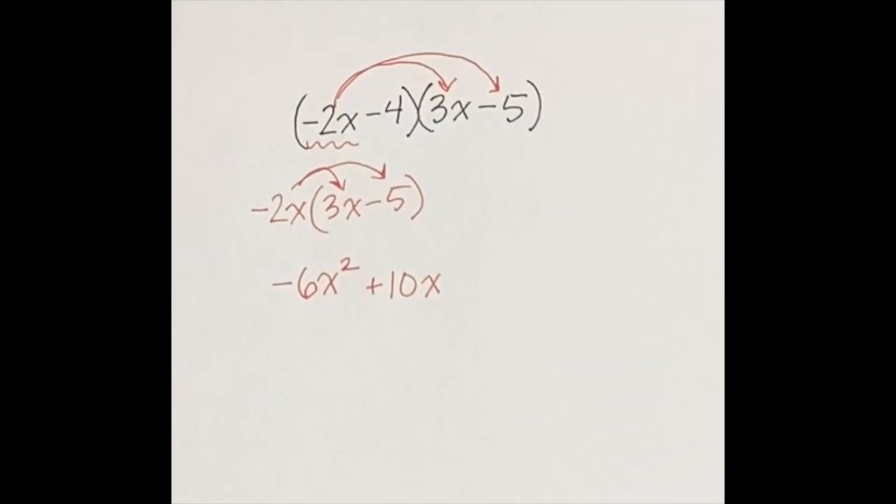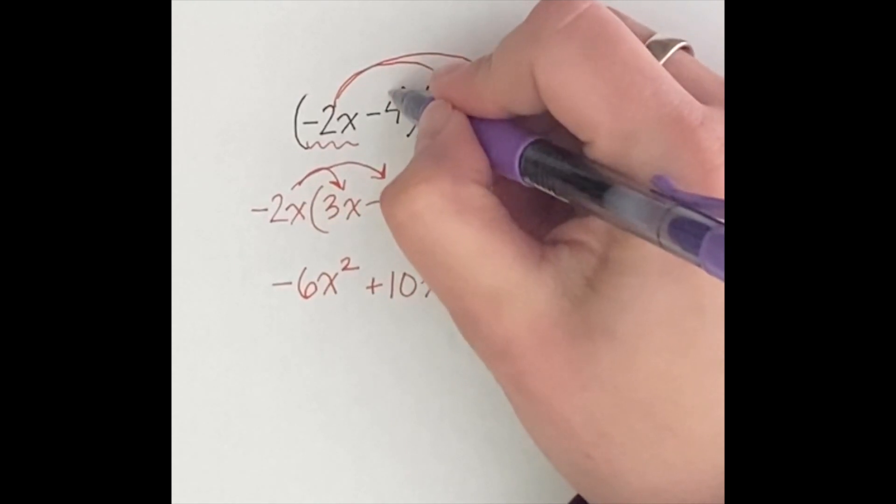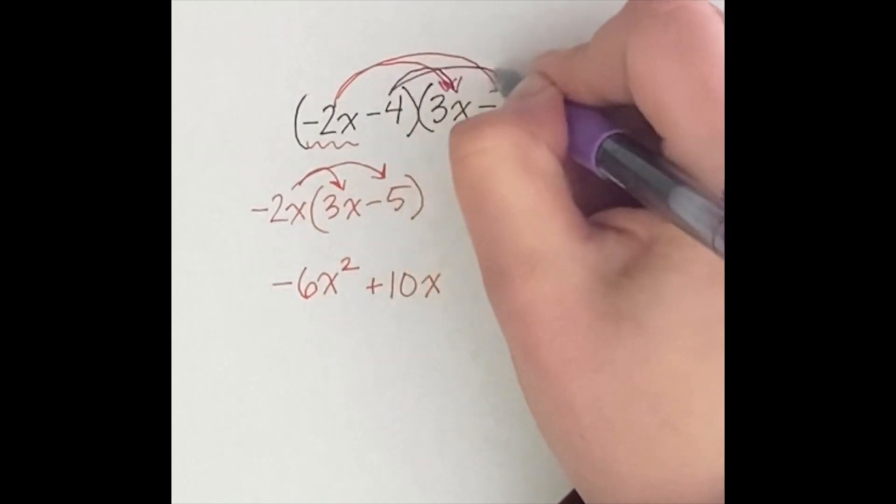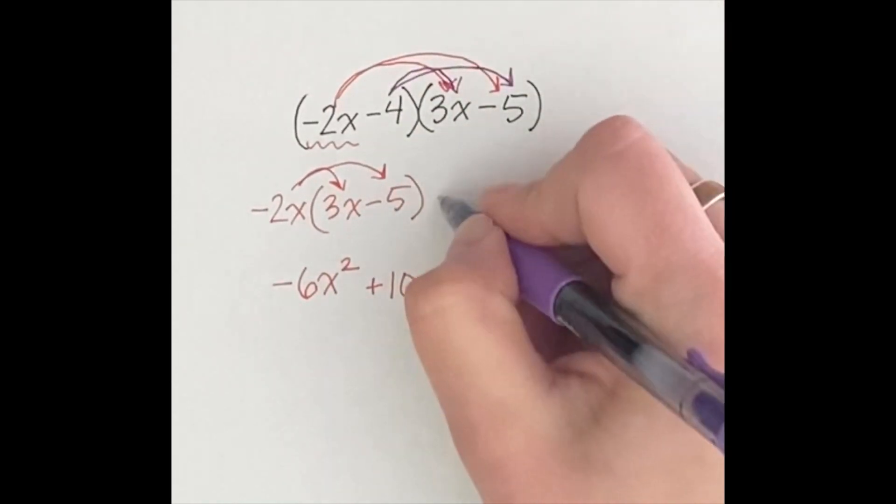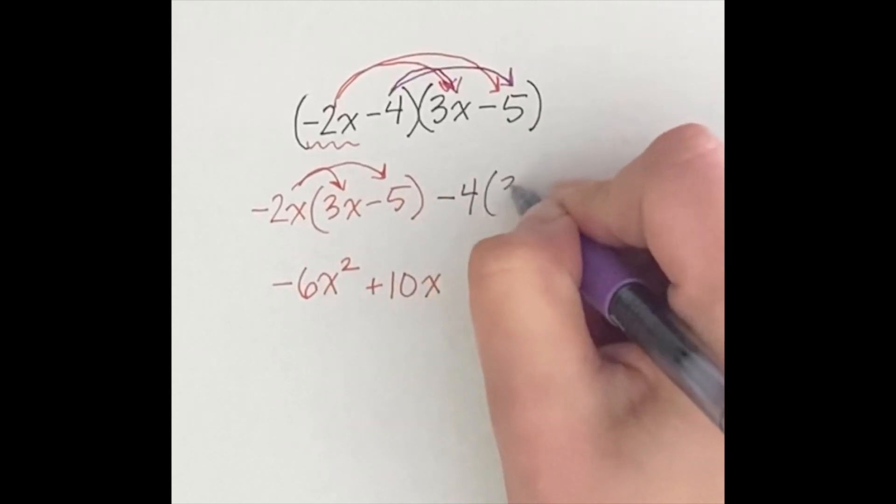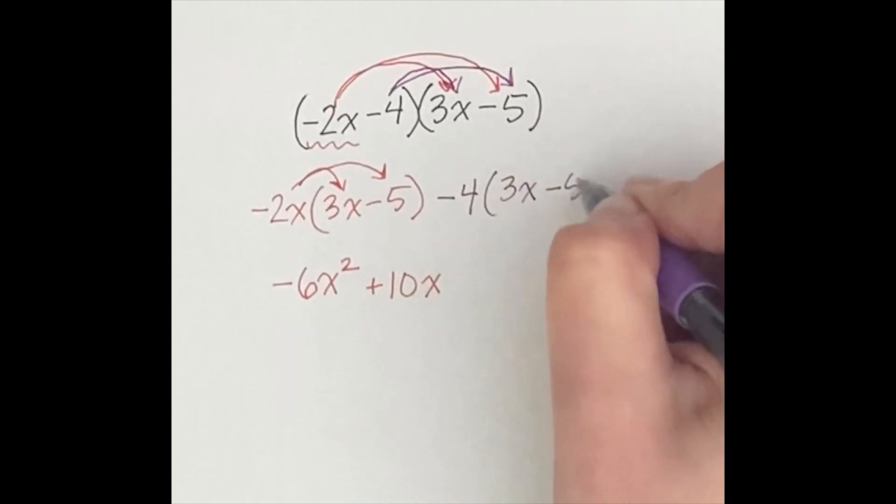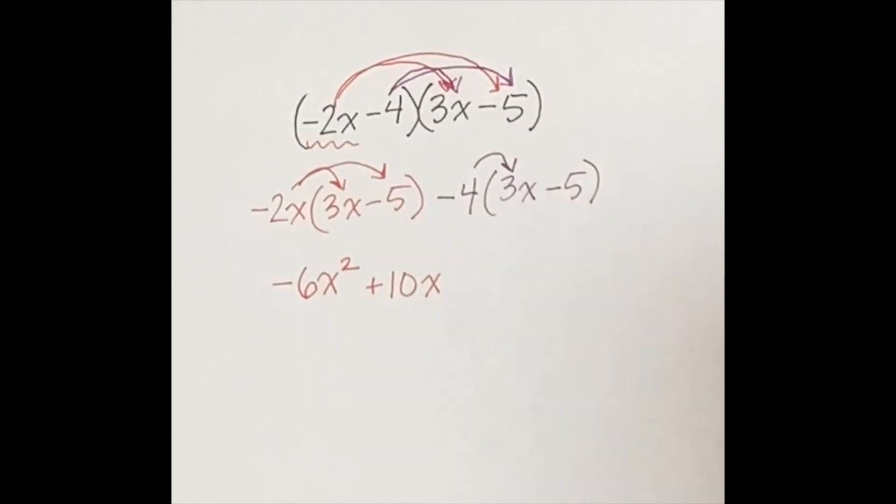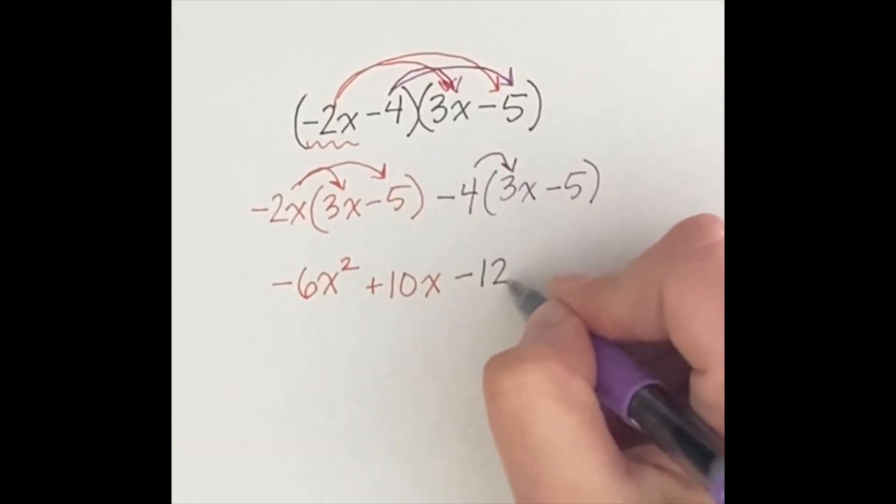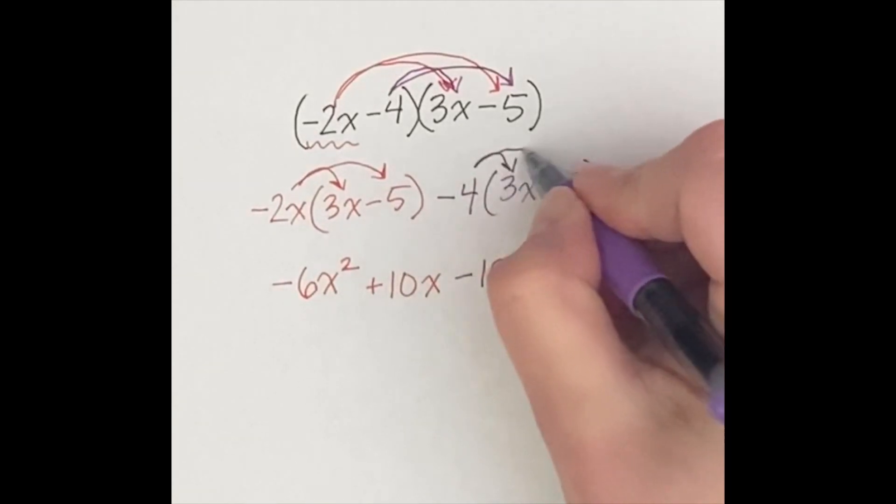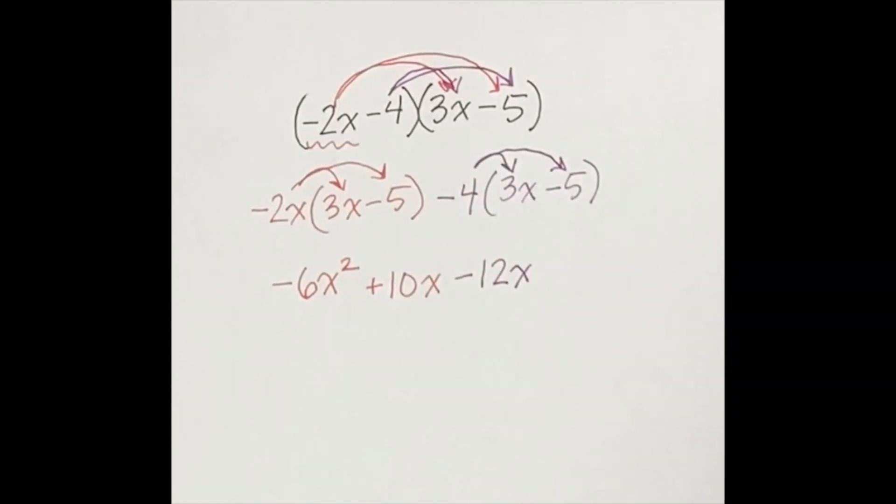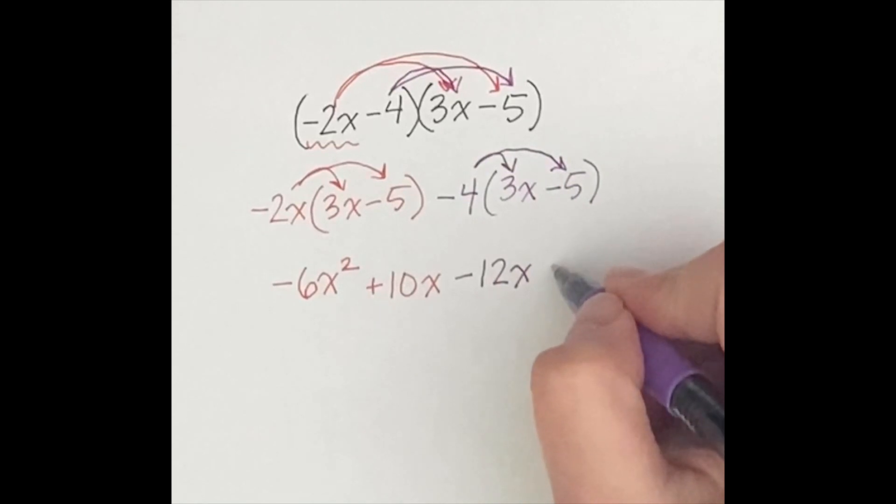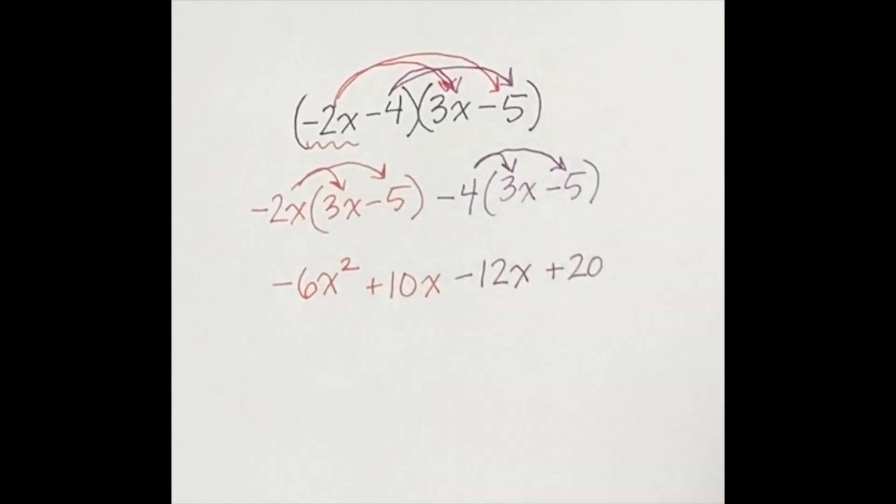Then I also have to take care of distributing this negative 4 throughout that second parentheses. So this is my thinking. I'm going to distribute this negative 4 throughout. So negative 4 times a 3x would be a negative 12x. And negative 4 times a negative 5 would be a positive 20.